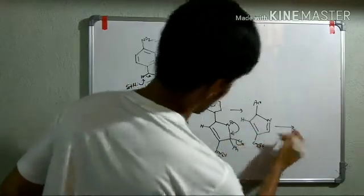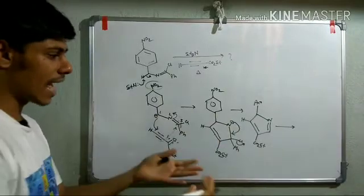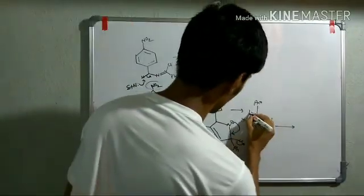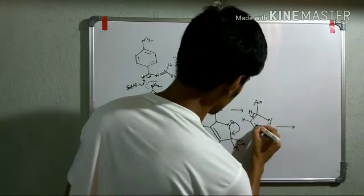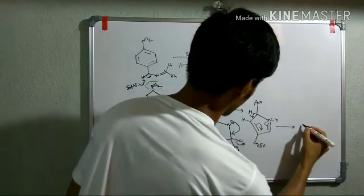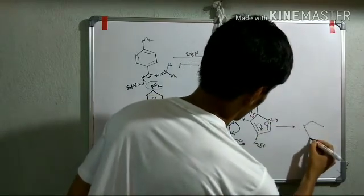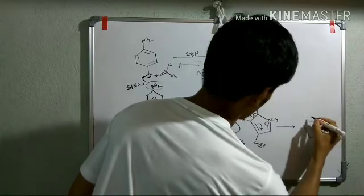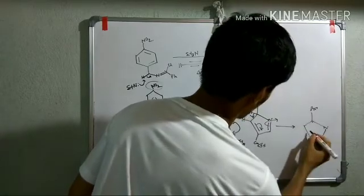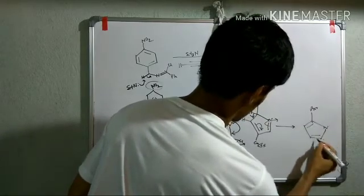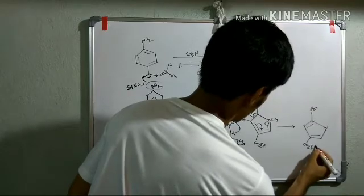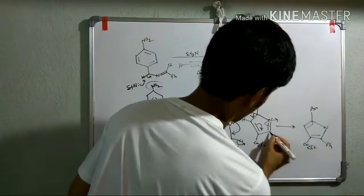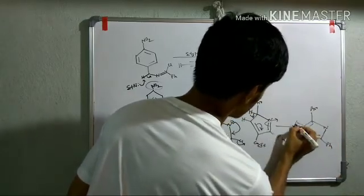But you can see this compound can easily aromatize like this way. So here you have one hydrogen; if this hydrogen goes like this, this compound can be aromatized. So this is how it will form an aromatic product.